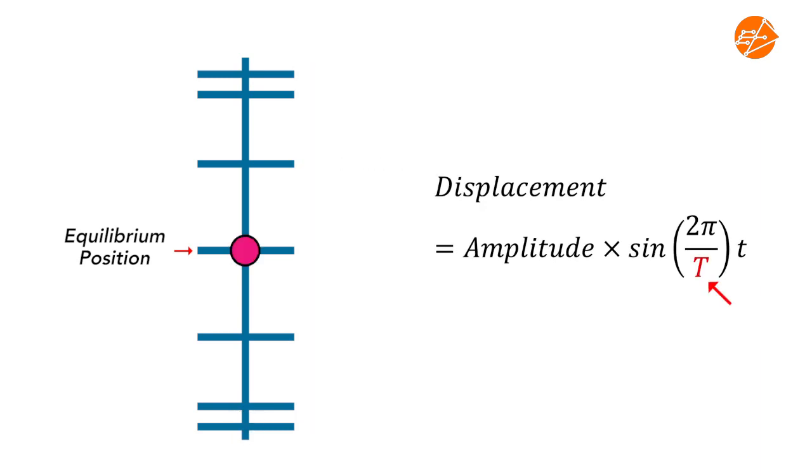T, the period, is the time taken for the particle to complete one full cycle. So for a period of 12 seconds, this is how the particle moves.